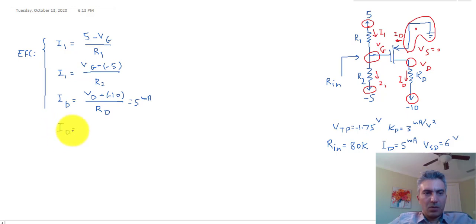Id is equal to Kp. We're going to assume that the lambda delta is equal to 0 also. Kp is equal to Vgs minus Vt to the power of 2. Now that's Vg minus Vs minus Vt to the power of 2, and Vg minus Vs is 0, minus Vt is a negative number, so that would be plus 1.75 to the power of 2. And again, this is also equal to 5 milliamps. So now we have Kp as 3 times Vg plus 1.75 to the power of 2, and that's equal to 5 milliamp.